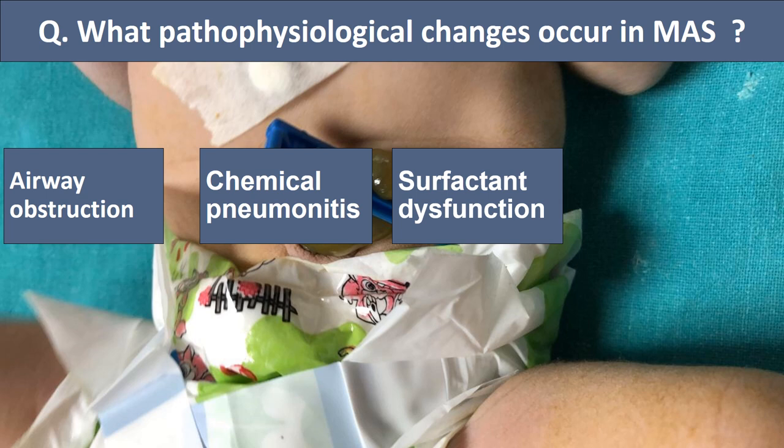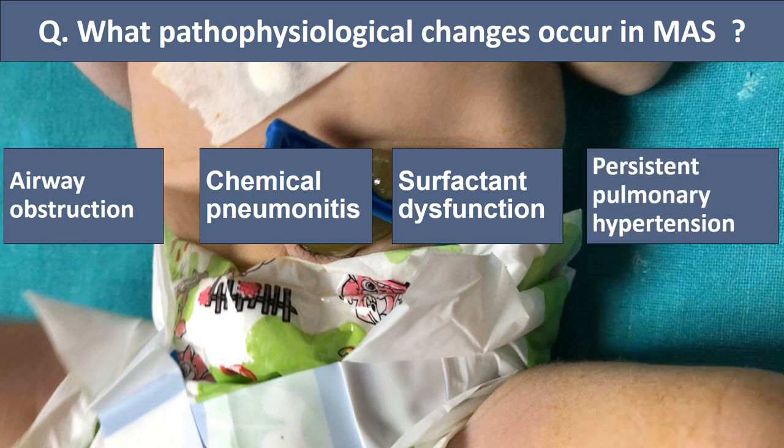In severe meconium aspiration syndrome, persistent pulmonary hypertension can also develop, leading to right-to-left shunting. This is due to various inflammatory and vasoconstrictive mediators released into the alveoli, such as endothelin-1, PGE2, and leukotrienes. These are the pathophysiological changes which can occur in meconium aspiration syndrome.